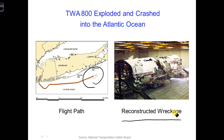Although terrorism was initially suspected, no evidence of criminal activity was ever found. So then the question became, what caused the airplane to explode during a routine flight and under routine flying conditions? The fuel tanks certainly contributed to the explosion, but something must have ignited the fuel tanks, such as a spark, bringing into question whether there were any electrical problems with the airplane that evening.